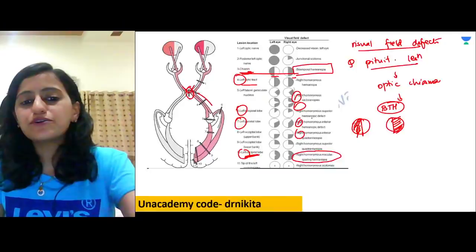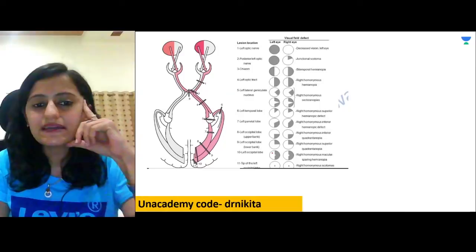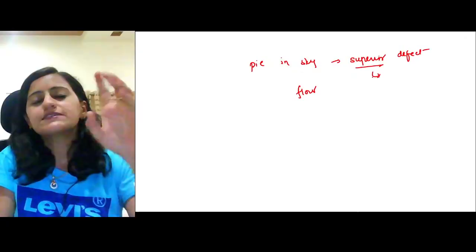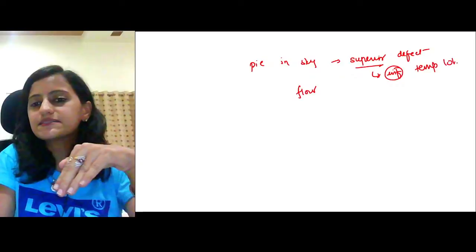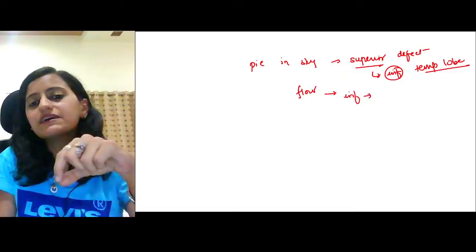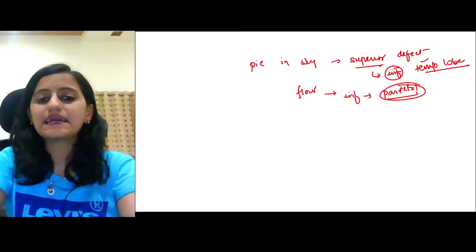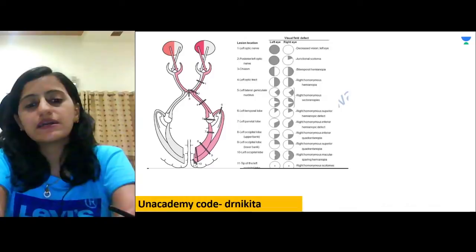For pie-in-the-sky and pie-in-the-floor: sky means a superior defect, which comes from the inferior lobe — the temporal lobe. Pie-in-the-floor means an inferior defect, from the superior lobe — the parietal lobe. So the temporal lobe causes superior quadrantanopia, and the parietal lobe causes inferior quadrantanopia.